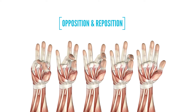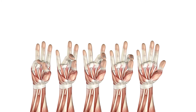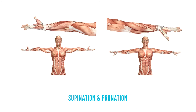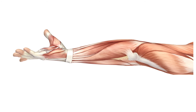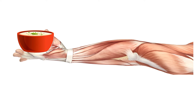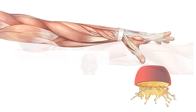The thumb also performs opposition and reposition. Opposition is when your thumb lies opposite another finger on the same hand, and when it returns back to the anatomical position it's called reposition. The little finger is the only other digit able to oppose. The forearm and hand can also be supinated or pronated — supination is turning your forearm with your palm up, as if holding a bowl of soup, while pronation is turning your forearm with the palm down, as if pouring out whatever is in the bowl.